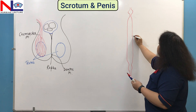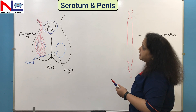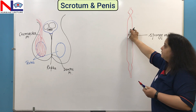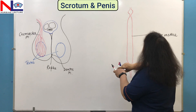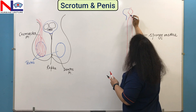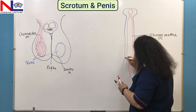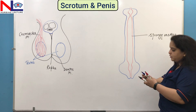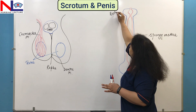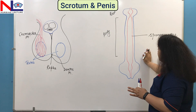The spongy urethra lies within this mid-ventral mass, which is called the corpus spongiosum. The penis has three parts: the attached portion is called the root, and the mid elongated part is the body, which is made up of the three erectile tissues.